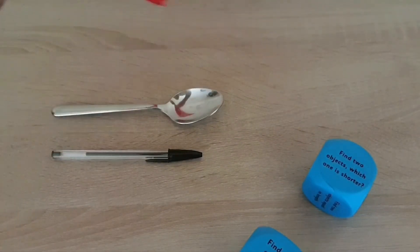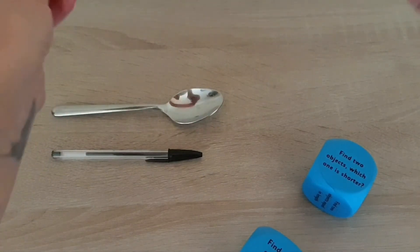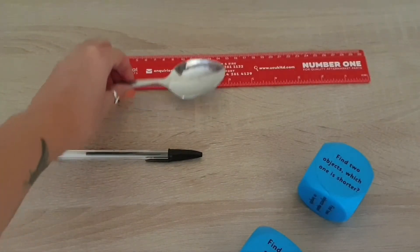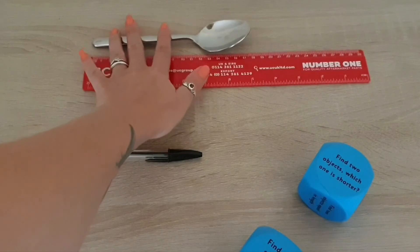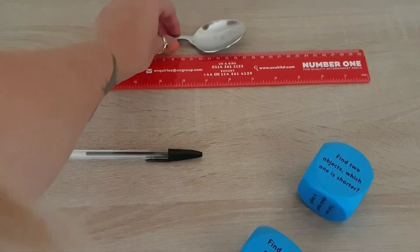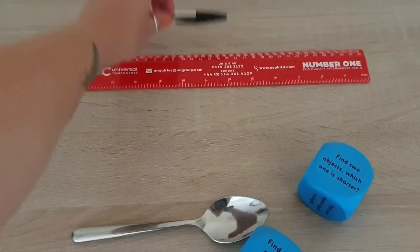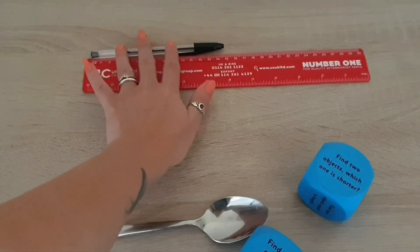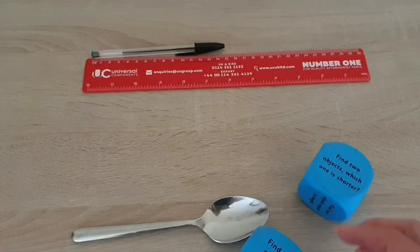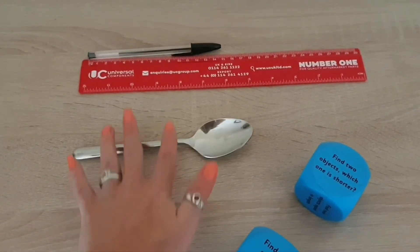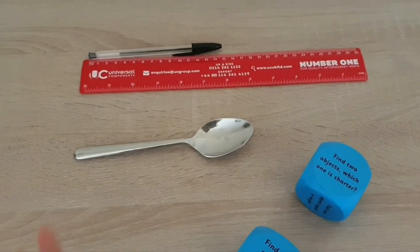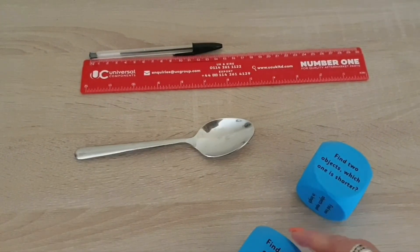So here we go. We've got our ruler here. You can ask the child to measure the first object and then decide how long that is, so say about 17 centimeters, then measure their second object. This one's about 15 centimeters. And then obviously that gives them the answer that the spoon is the longer object and the pen is the shorter object.